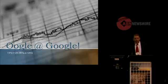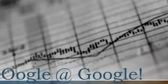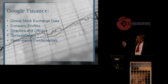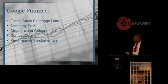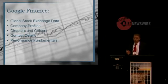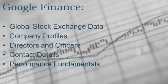Not very many people are aware that Google has a search engine concerned completely with global financial data. I've divided it here into five sections. They have global stock exchange data, mostly delayed 20 minutes. You can look up any company listed on any stock exchange in the world and find their current share price. You have company profiles including the directors and officers, the contact details, and the performance fundamentals.